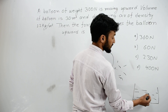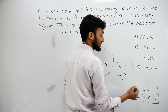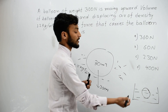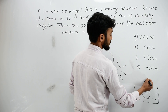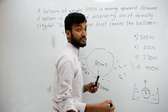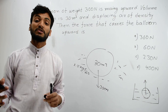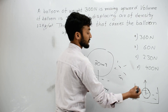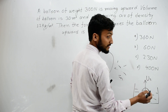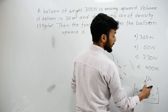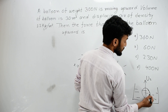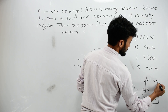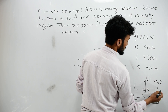When an object is in a fluid of lower density, we use the buoyant force. The buoyant force is equal to the weight of the fluid displaced.